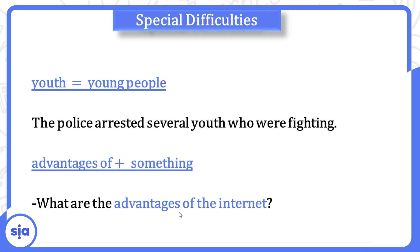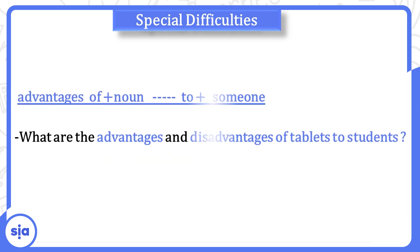'Advantages of' plus something — مميزات حاجة معينة. Example: What are the advantages of the internet? The pattern is 'advantages of + noun + to + someone.' Example: What are the advantages and disadvantages of tablets to students? — مميزات وعيوب التابلت للطلاب.